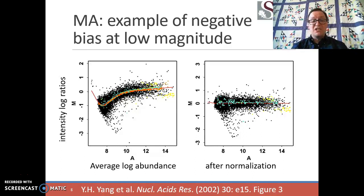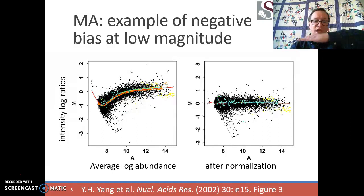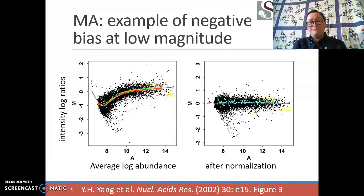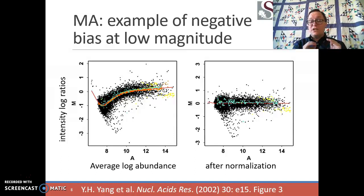When you see a distortion where all of the data move up or down from the center line, we suspect a problem. Here we see a pretty big distortion — genes with an average abundance around eight on the log scale have deviated away from the M equals zero line. This means there's a strong bias among genes at low magnitude toward a negative log ratio. If you know most genes should not be changing, tools that understand the bulk of data should fall on the M equals zero line can correct for these effects, as demonstrated in this 2002 paper.